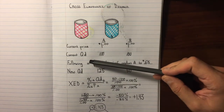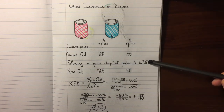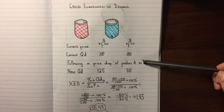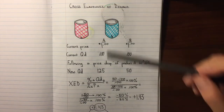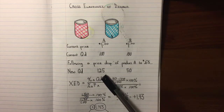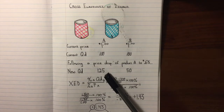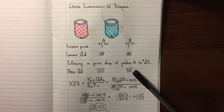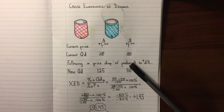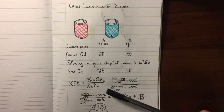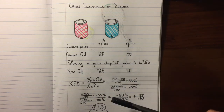Following a price drop of product A from $1 to $0.65, there's been a change in the quantity demanded for each product. When we calculate the percent change in quantity demanded, we use the quantity demanded figures for product B, but when we calculate the percent change in price, we use the price information for product A.